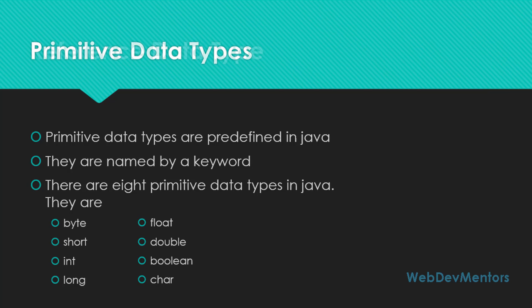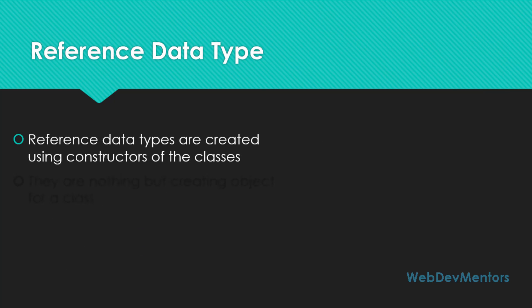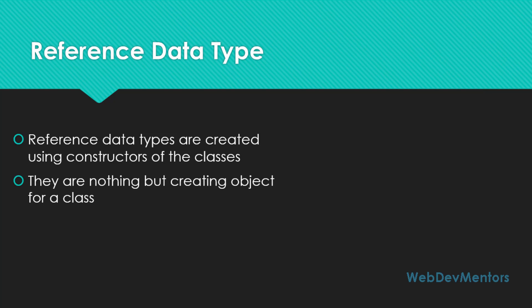Reference data types are created using constructors of the classes that you're creating. Reference data types are used when you create an object for a class — that object is called a reference data type. Apart from your own classes, there are also classes available in Java, and they also come under the reference data type when you create an object for those classes.